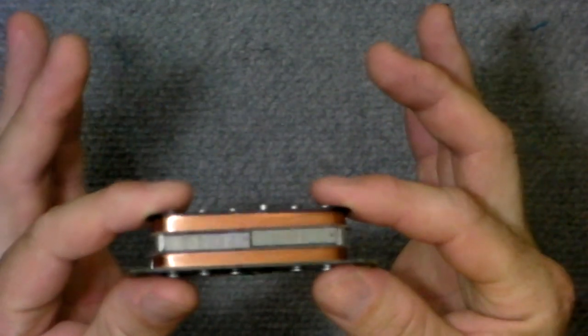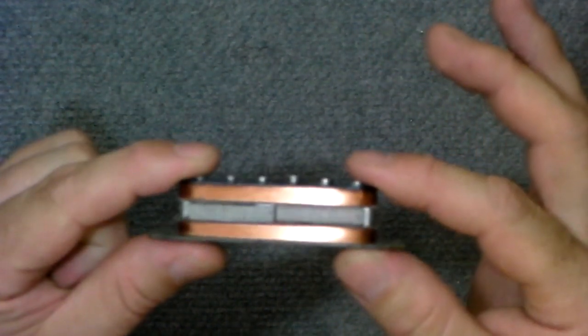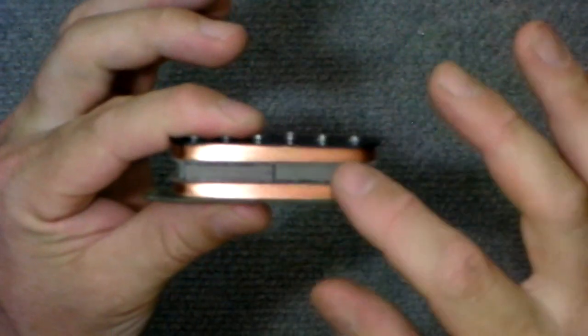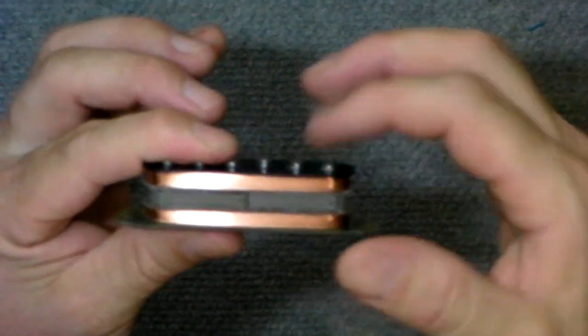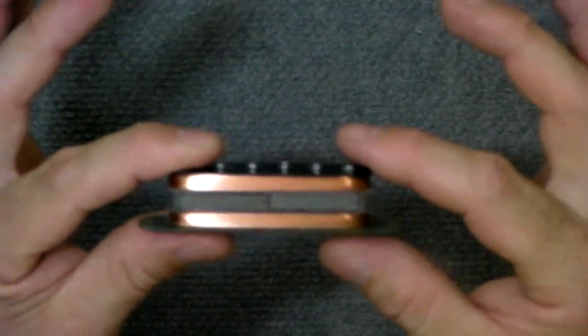What have we got? Well, we've got what is essentially a humbucker in line. It's two coils, a magnet in the middle, you've got your pole pieces running through. I mean, it's not exactly the same as a humbucker, but the principle is the same.